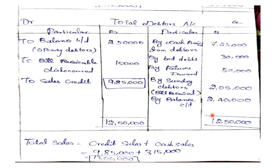The closing balance of bills receivable is 2,50,000 minus 1,50,000, giving us 9,85,000 as the credit sales figure. Total sales equals credit sales 9,85,000 plus cash sales 3,15,000, which gives us 13,00,000 as the total sales.